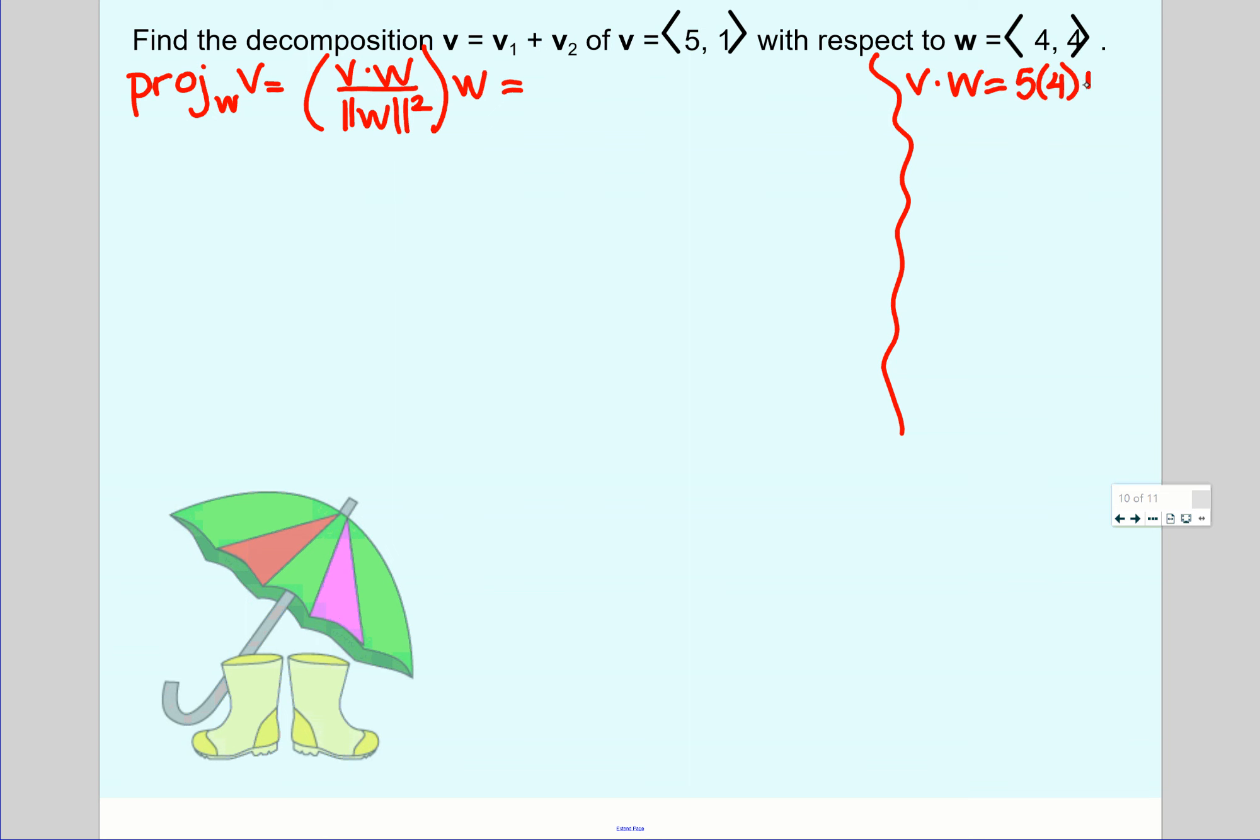Multiply the first components, 5 times 4. Multiply the second components, 1 times 4. And here I would get 24. I also need the magnitude of w. Square root, 4 squared plus 4 squared. So that's 16 and 16. It's going to be rad 32. You can break this one down, but I wouldn't, because we're just going to square it anyway. So it's going to get rid of the radical for us. Filling that in up top, my dot product is 24. My magnitude is rad 32, but when I square it, I just get 32 times vector w, 4, 4.